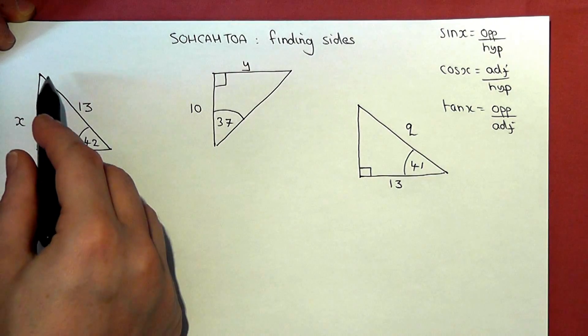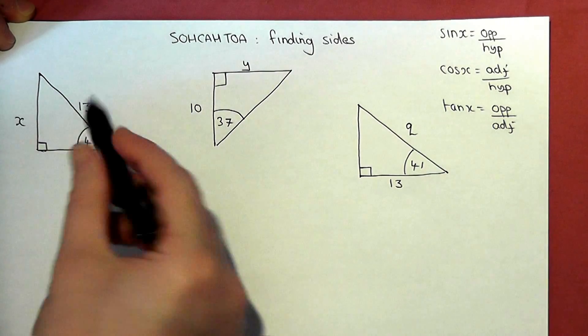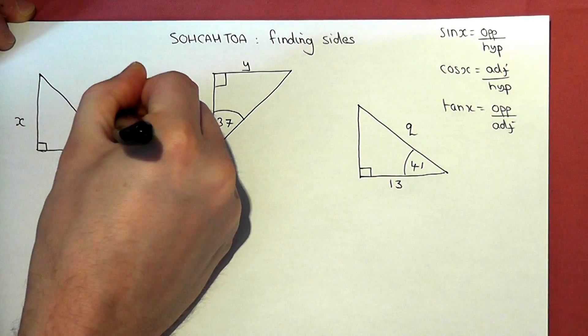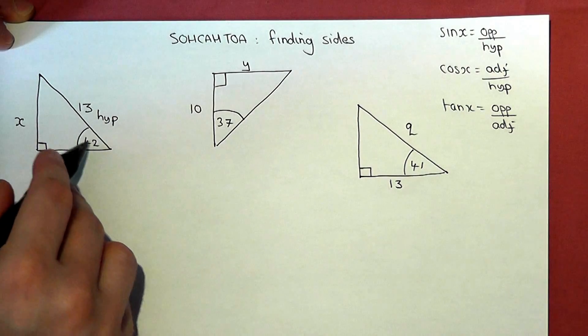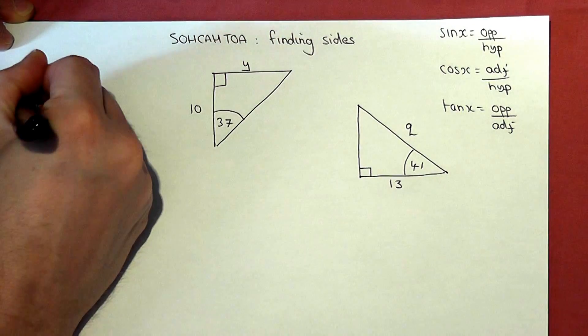Now in the first one the 13 is the hypotenuse, it's opposite the right angle, but the unknown is opposite the angle, so that's called the opposite.